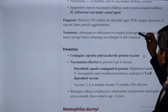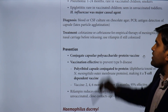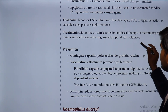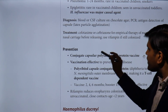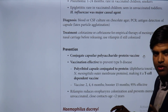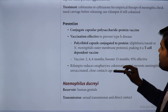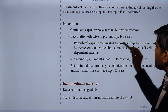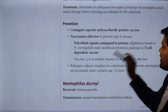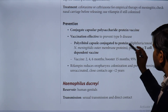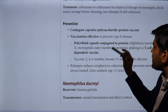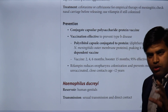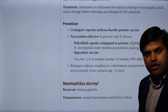We can also do PCR and antigen detection by latex agglutination test. Treatment: ceftriaxone for empirical therapy of meningitis. For nasal carriers, rifampicin is used to remove colonization. Prevention: the conjugate capsular polysaccharide-protein vaccine is effective against type B diseases. The vaccine contains polyribitol phosphate capsule conjugated to diphtheria toxoid or Neisseria meningitidis outer membrane protein, making it a T-cell dependent vaccine.